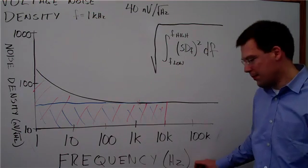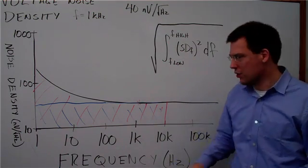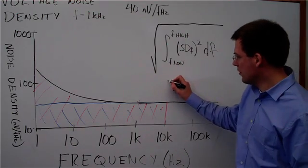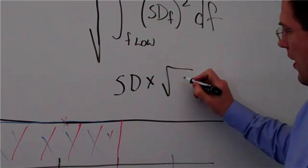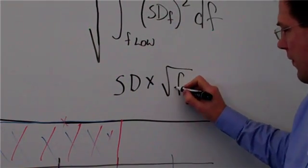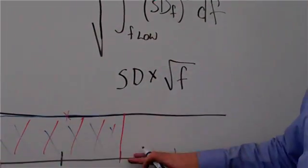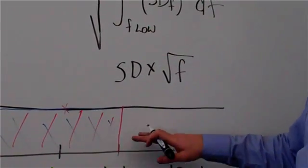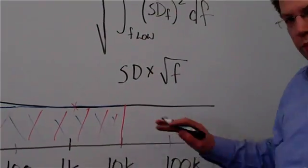So now that we've got our box, what do we do? Well now it's very simple. So instead of this complicated equation, all we have to do is we take our spectral density and we multiply it by the square root of our frequency. So if we say this is 40 nanovolts per root hertz here and this is 10 kilohertz, we would just multiply that 40 nanovolts per root hertz times that 10 kilohertz. So it's pretty easy.